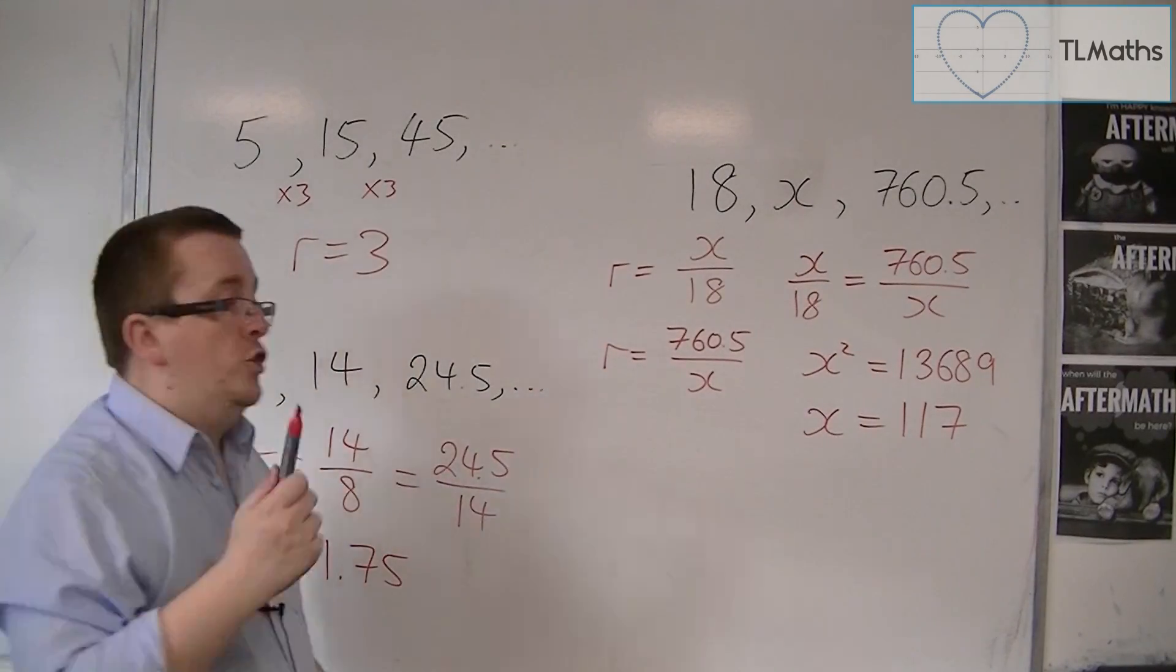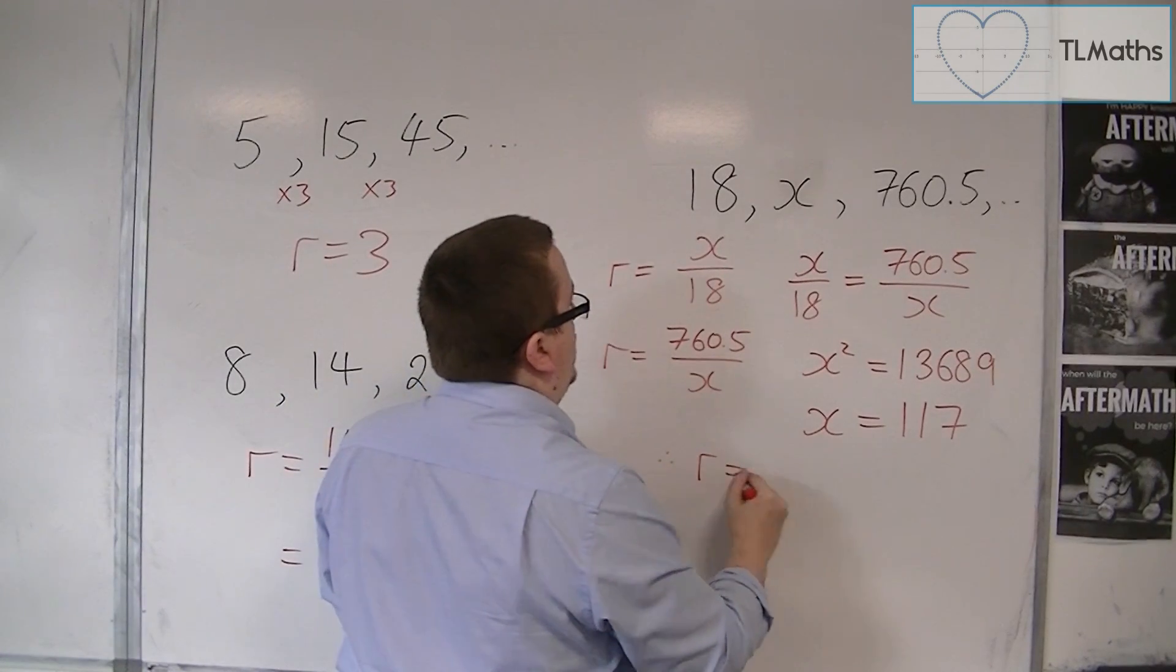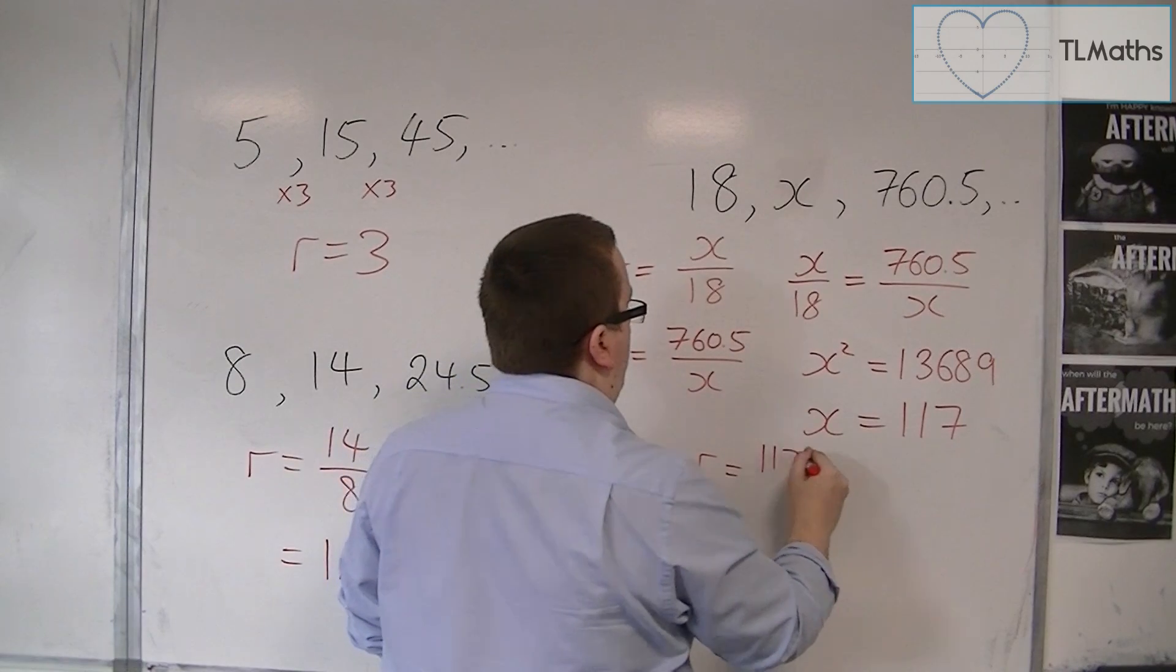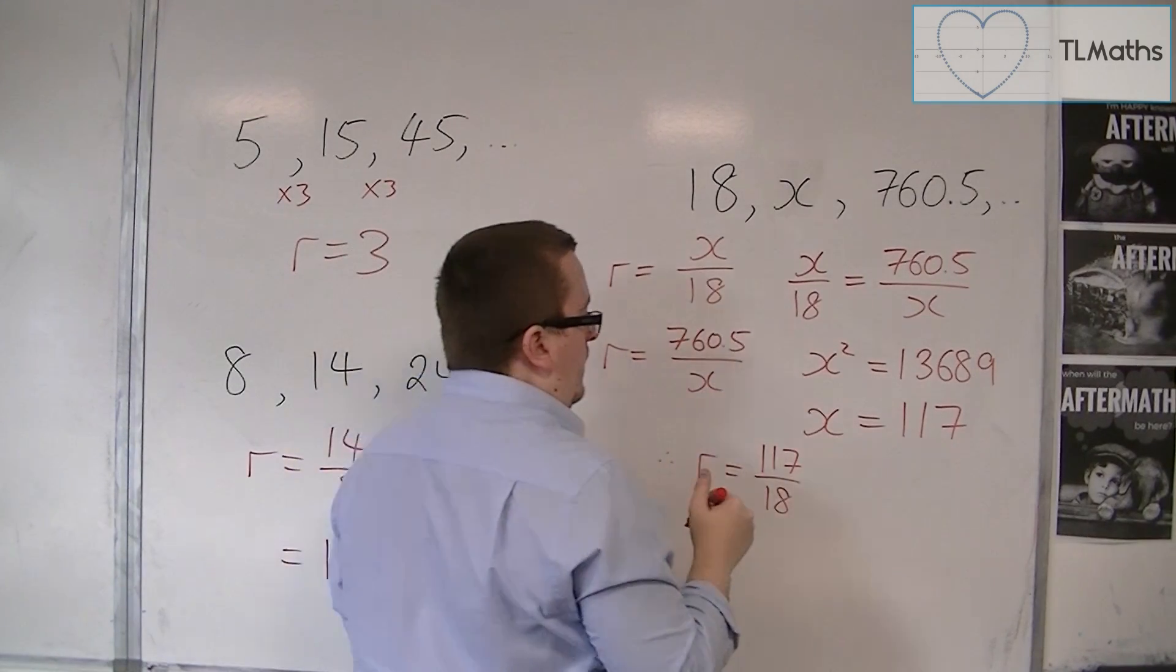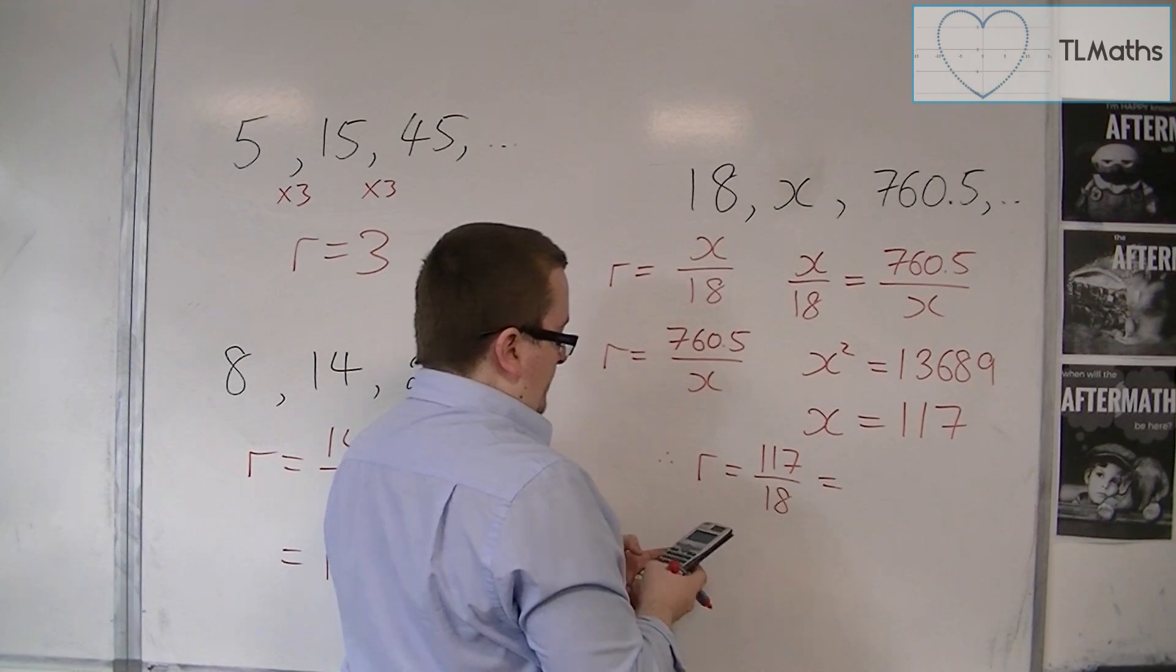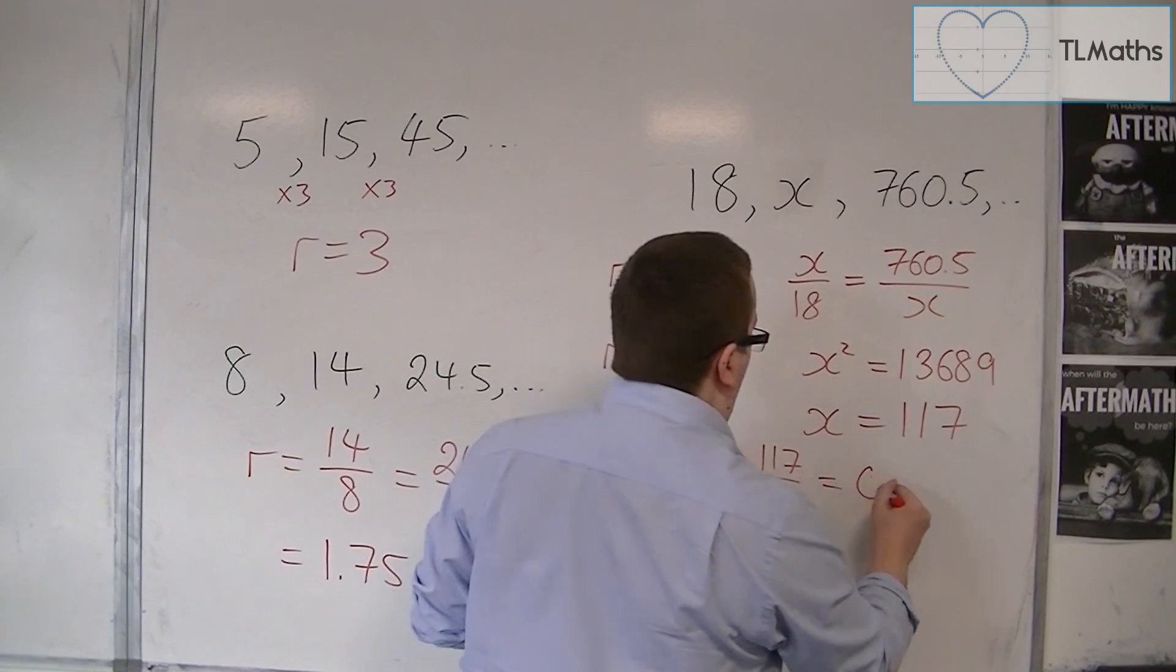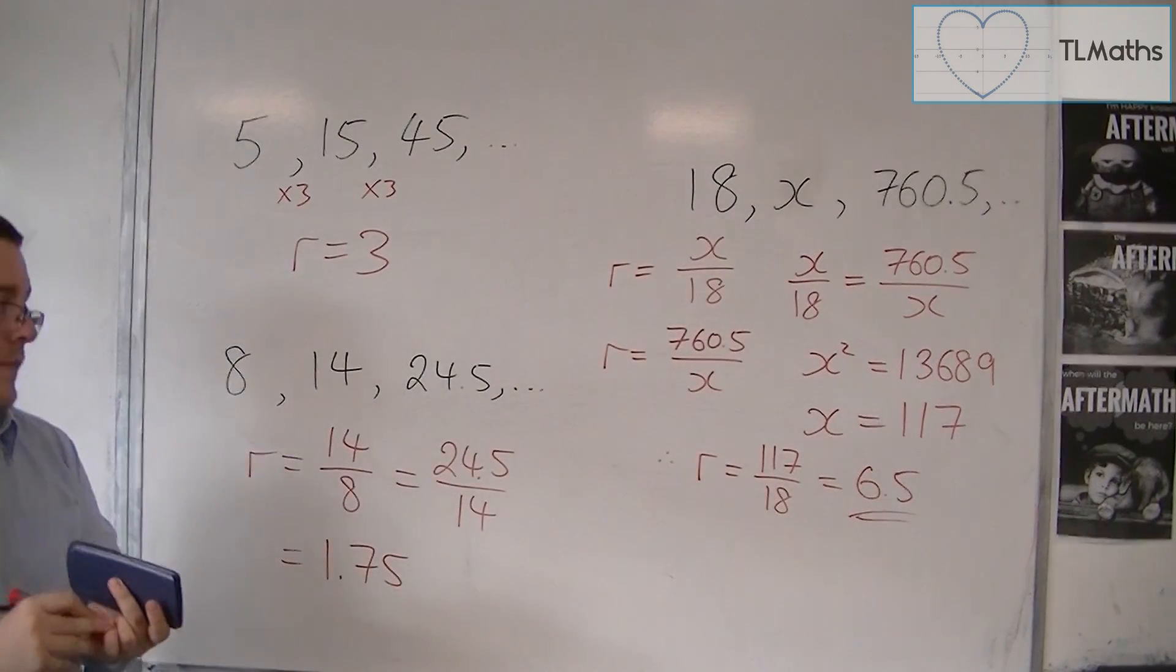And subsequently the common ratio, so therefore the common ratio is 117 over 18 or 760.5 over 117. So that is equal to 6.5. That's the common ratio.